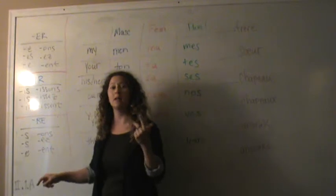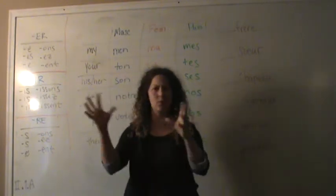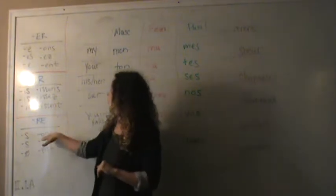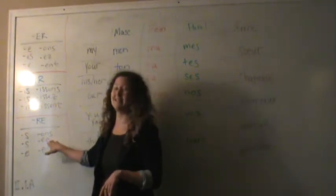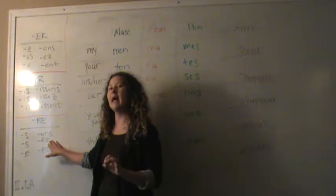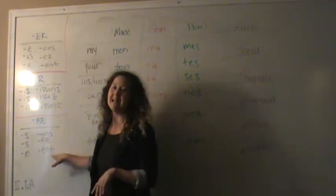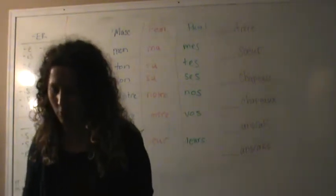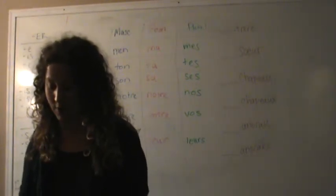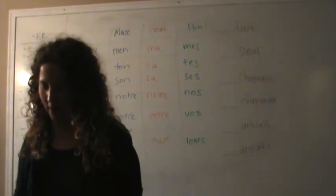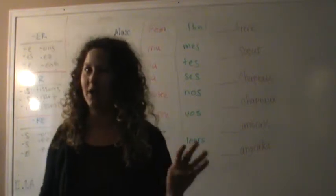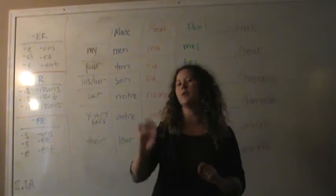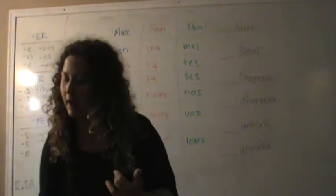For IL, L, and ON, there is no ending. It's just whatever that stem was after you took off that RE. For NU, it is O and S. For VU, it is EZ. And for IL and L, it is ENT. If you would like to see these used a little more, then you can also, once again, look in the back of your book on page 487.